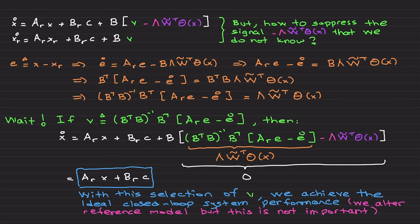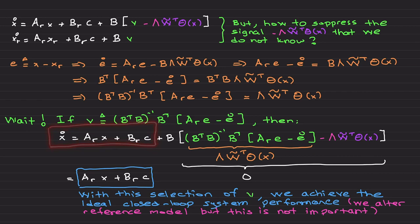If you select v to be (B^T*B)^{-1}*B^T*(A_r*e minus e-dot), then the adaptation error term and v cancel each other, and we end up having the ideal model dynamics. With this selection of the performance recovery signal, we achieve ideal closed-loop system performance under uncertainties. Yes, we are modifying the reference model, but the reference model is something implemented virtually — don't make a big deal about it. At the end of the day, if you focus on actual system performance, v cancels the adaptation error and you obtain perfect behavior.